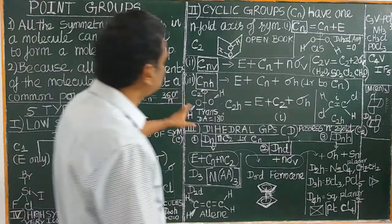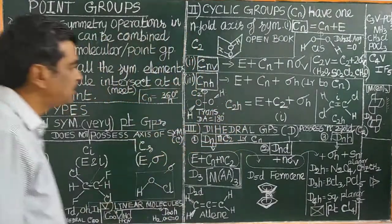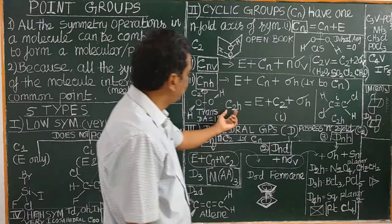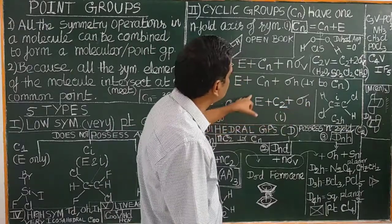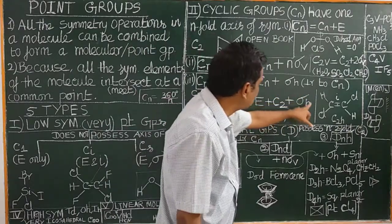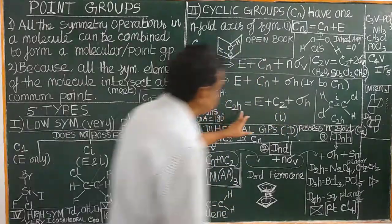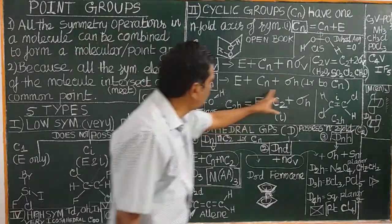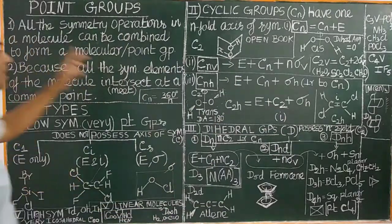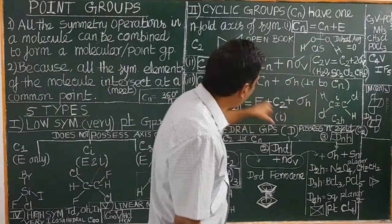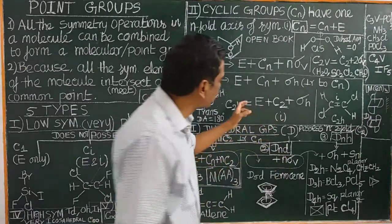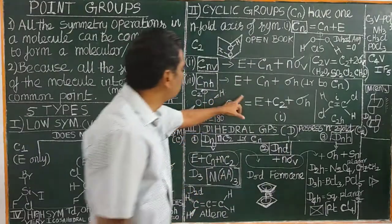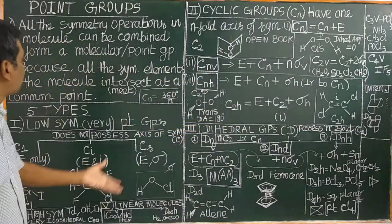For example, let us consider C2H. C2H is a point group. Each point group is a collection of symmetry operations that are operated on a molecule — that is, possessed by a molecule. All the symmetry operations in a molecule can be combined to form a point group, or molecular point group.